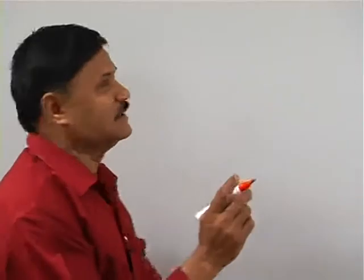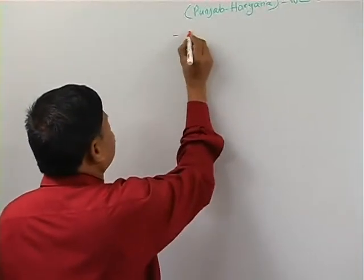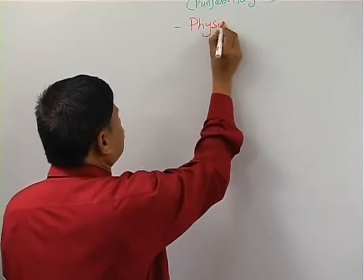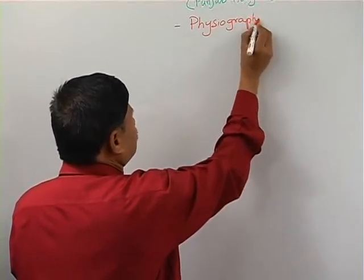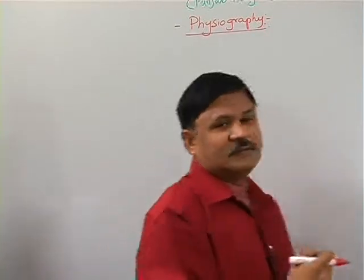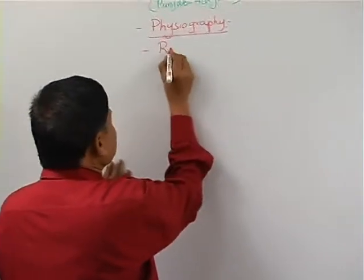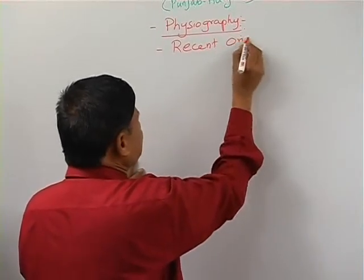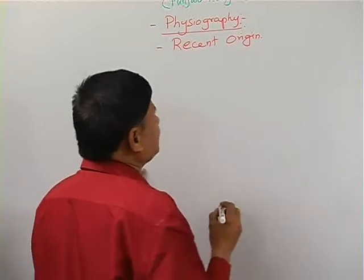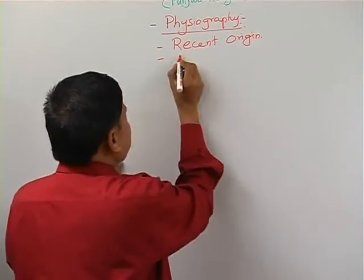Now let us see the physiography — this may come for exam questions. Write or explain the physiography of the Punjab-Haryana plain. This plain is of recent origin and has been created by the depositional work of the Himalayan rivers, formed from sediments brought by those rivers.